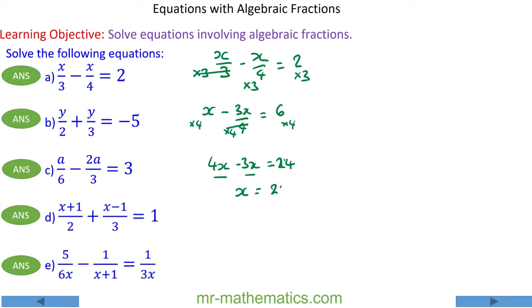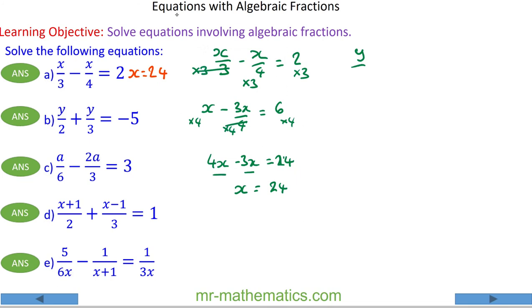Next we've got y over 2 plus y over 3 equals negative 5. So I want to begin by multiplying every term by the 2, because this division and multiplication of the 2 will cancel, so this becomes y plus 2y over 3 will equal negative 10.